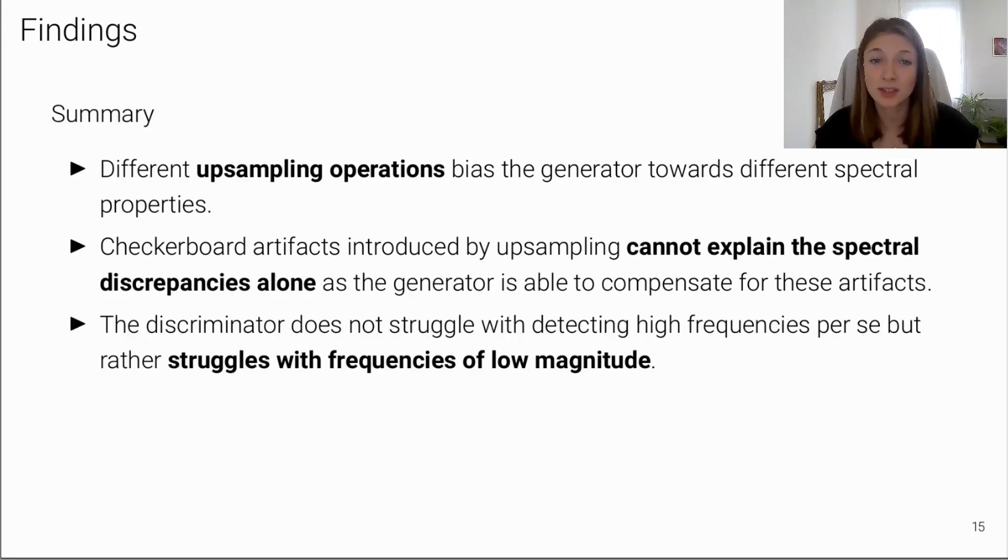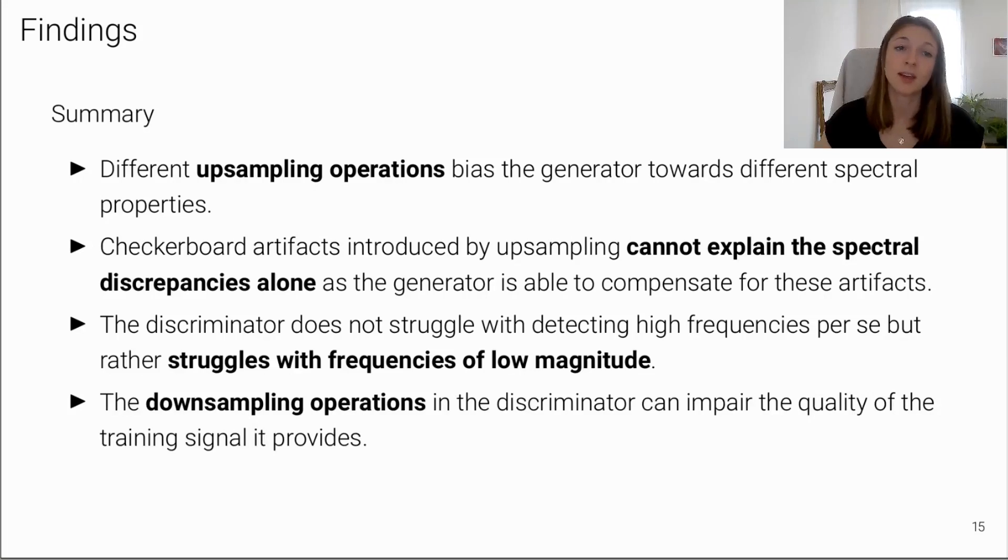The discriminator does not struggle with detecting high frequencies per se, but rather struggles with frequencies of low magnitude. Further, the downsampling operations in the discriminator can impair the quality of the training signal that it provides. In our paper, we demonstrate that these findings extend to the full GAN training and investigate proposed fixes.